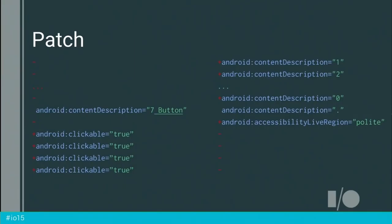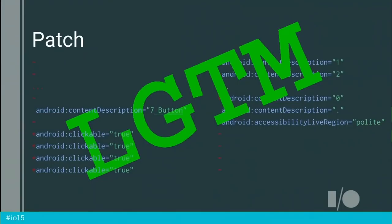We've added back some content descriptions and removed that clickable view. This is really the workflow we want to see — detailed, actionable feedback getting back to developers quickly so they can make fairly small-scale changes to make sure they build quality products. We're working hard to get this tool out to you.